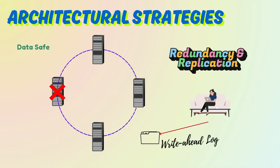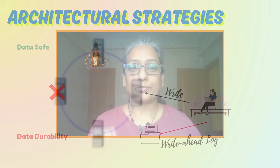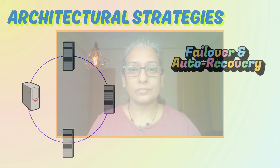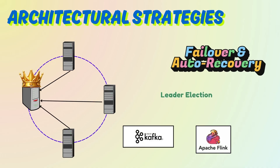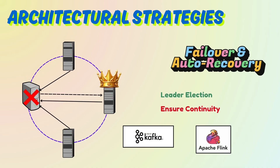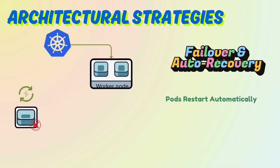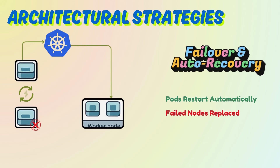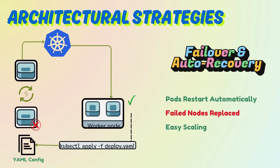Second: design for failure — add failover and auto recovery so when a node dies, your system does not. Systems like Kafka and Flink use leader election to ensure continuity. Kubernetes is an absolute lifesaver here: pods restart automatically, failed nodes get replaced, and you can scale up with one line of YAML.